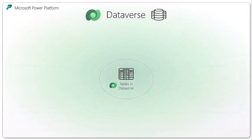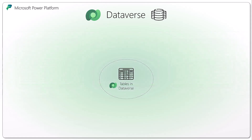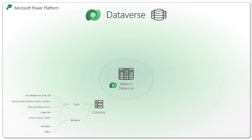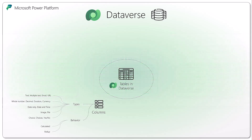Dataverse is effectively a set of tables. When you start a new environment, you get a set of tables available by default, like account, contacts, and so forth. But you can, of course, build your own tables. You can also create columns of different types: text, multi-text, email, decimal, duration, and so forth.